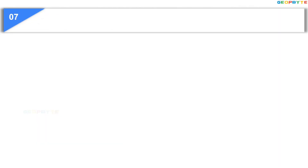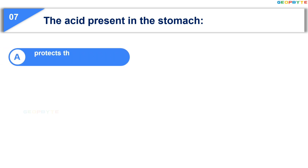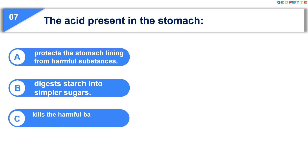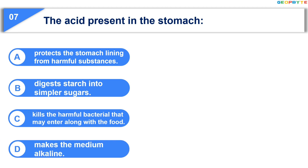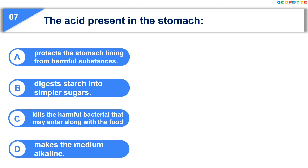Now let us see the seventh question: the acid present in the stomach — Option A: protects the stomach lining from harmful substances; Option B: digests starch into simpler sugars; Option C: kills the harmful bacteria that may enter along with the food; Option D: makes the medium alkaline. Your time is up and the correct answer is Option B: digest starch into simpler sugars.